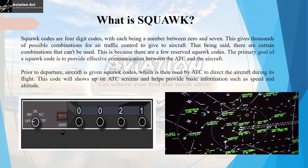The primary goal of a squawk code is to provide effective communication between the ATC and the aircraft. Prior to departure, an aircraft is given a squawk code which is used by ATC to direct the aircraft during its flight. This code shows up on the ATC screen and helps provide basic information such as speed and altitude. An aircraft may also be asked to change the squawk code once airborne, to enhance communication between different towers.